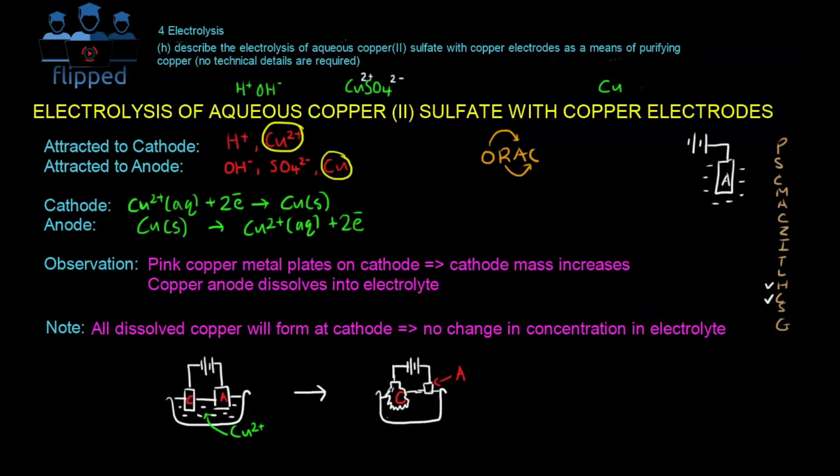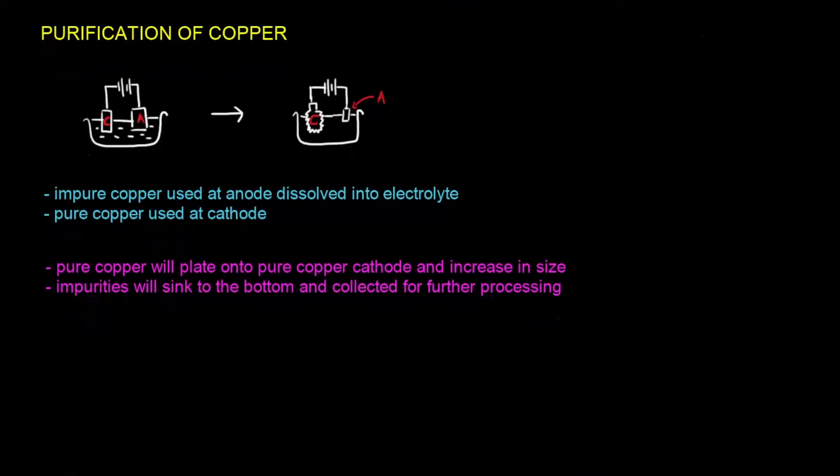That means to say that if I dissolve, for example, 5 grams of copper anode into the solution to form Cu2+, 5 grams of that will form at the cathode. So there's no change in this solution. With this in mind, there's an important application called purification of copper. This is what I've drawn just now. After the whole reaction, the cathode will increase in size, much bigger in size, whereas the anode will decrease in size.